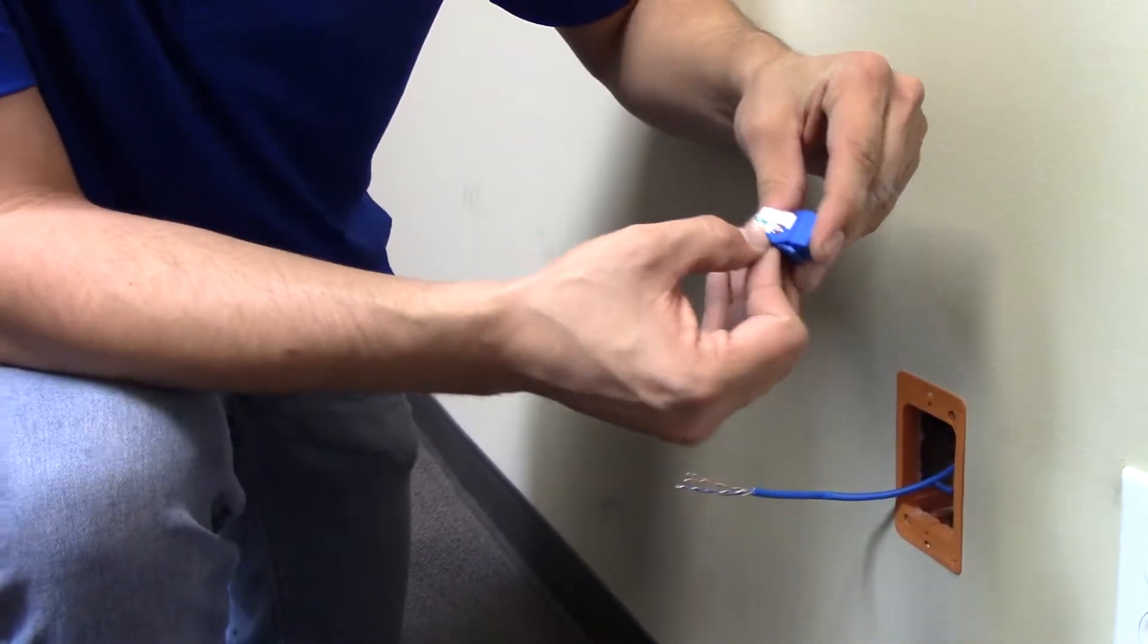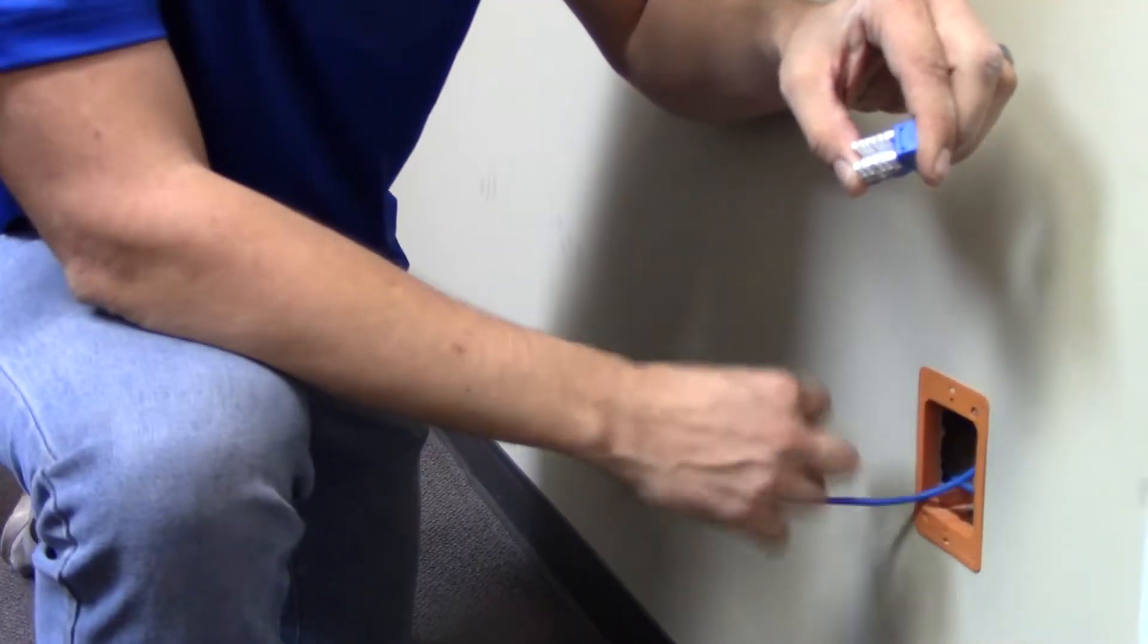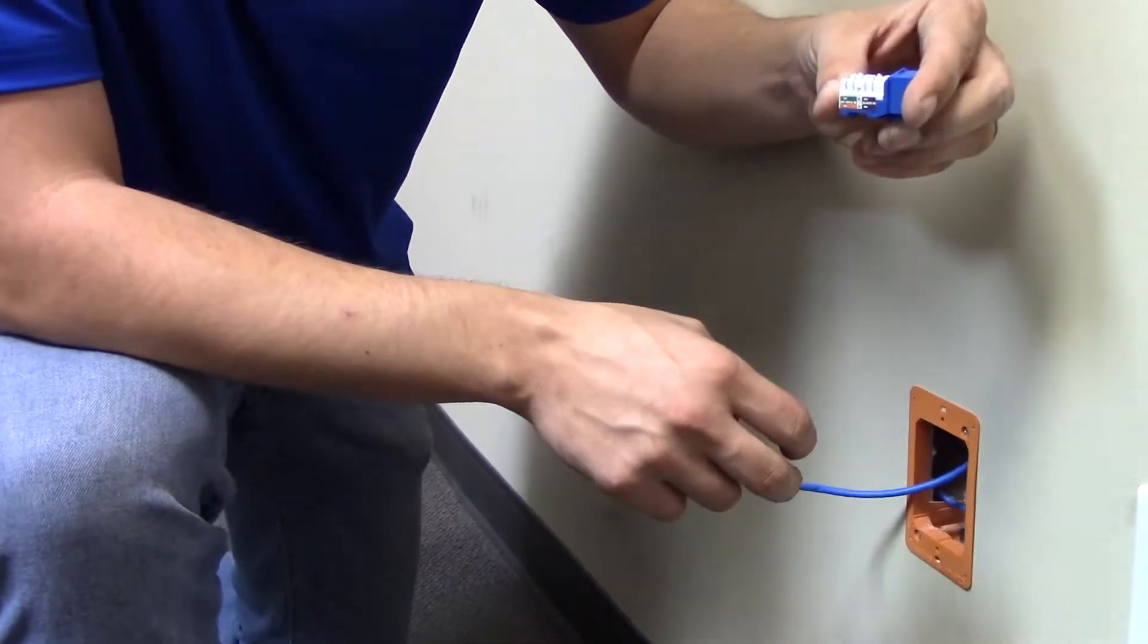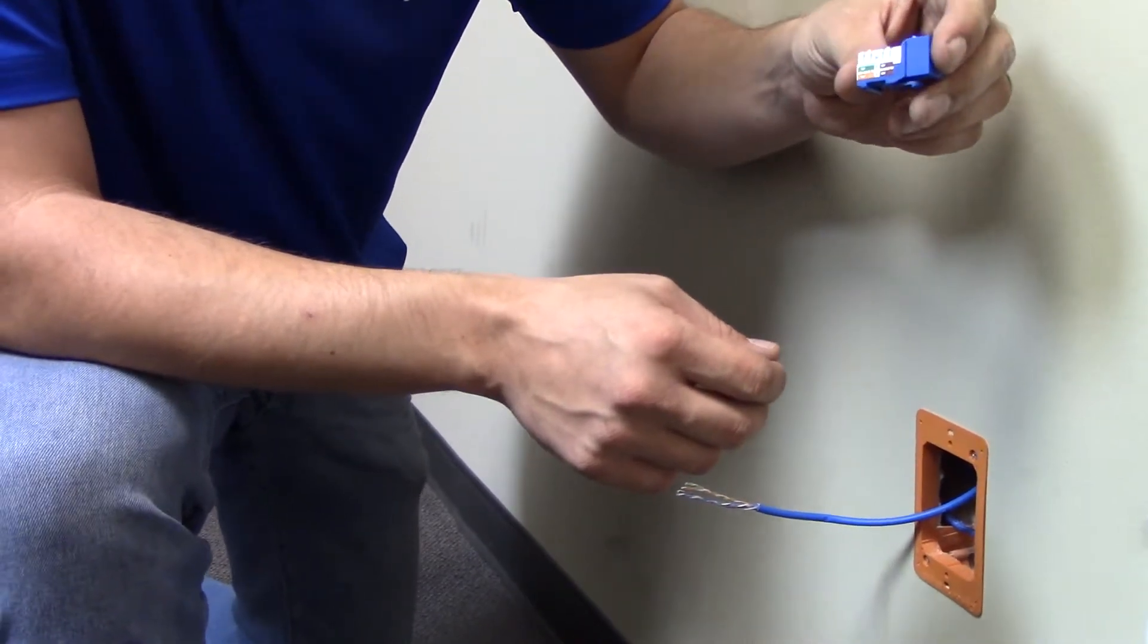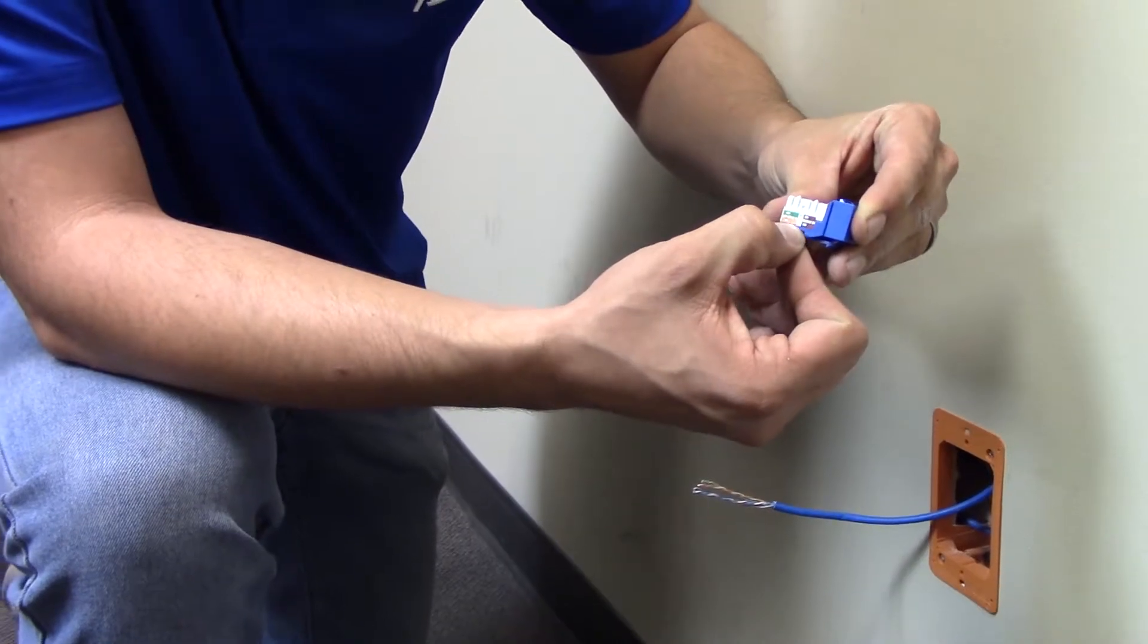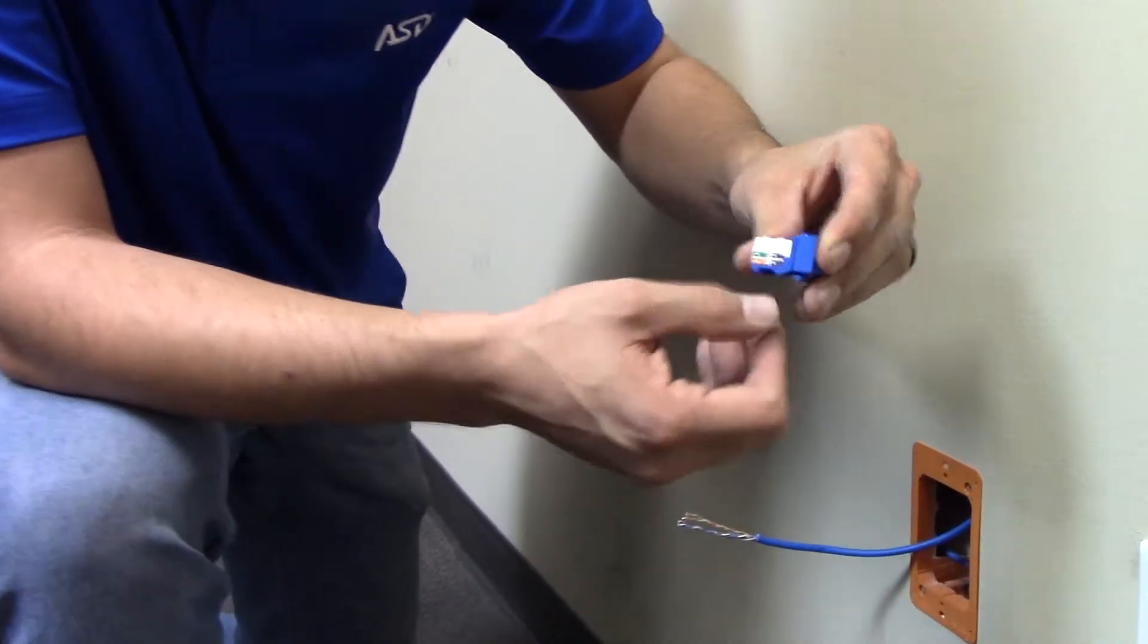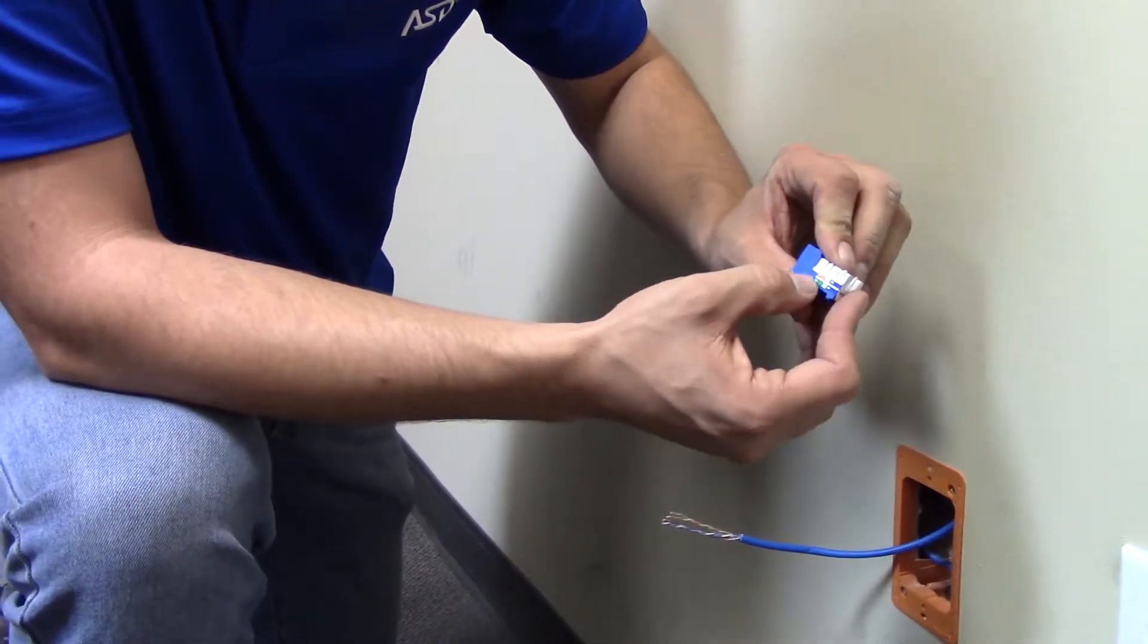On the side of the jack you'll notice what they call a color code. This tells you where to put each cable in the jack whenever terminating in order to assure that continuity is correct on both sides. The standard in America is the 568B, which is the top one, not A, but B. So if you notice you've got green right here, brown, orange, and blue.